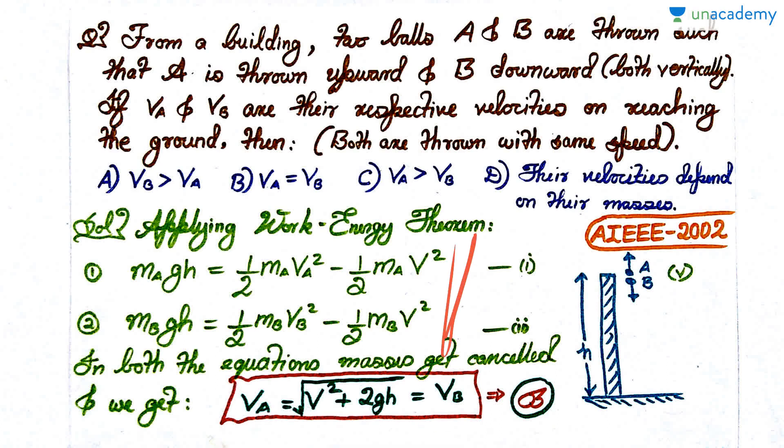We get VA equal to square root of V² plus 2gh, which is same as VB. Both will come out to be same, which indeed says that VA is equal to VB.